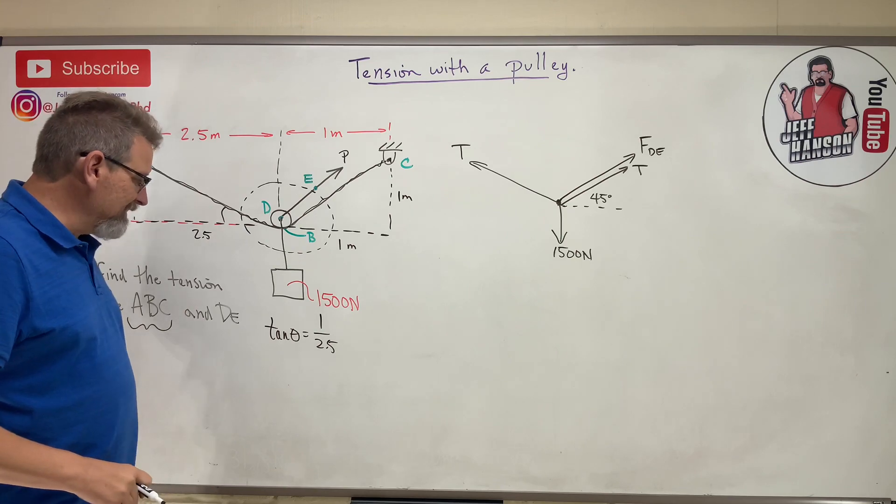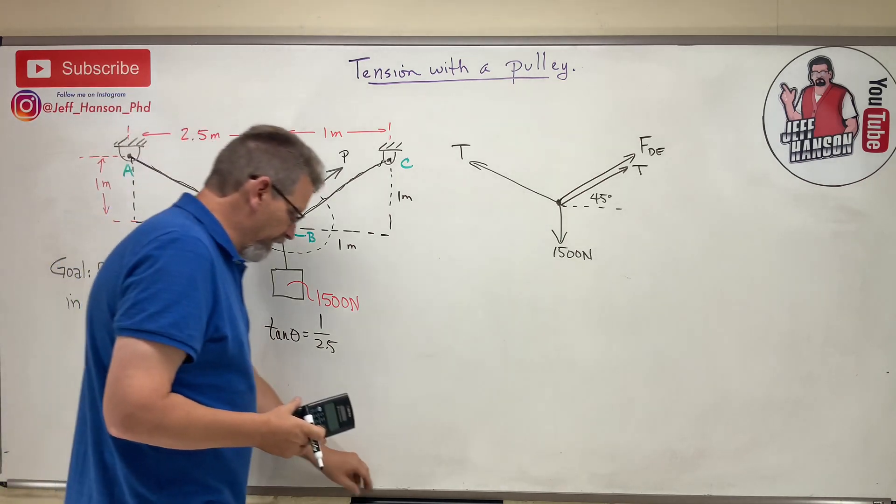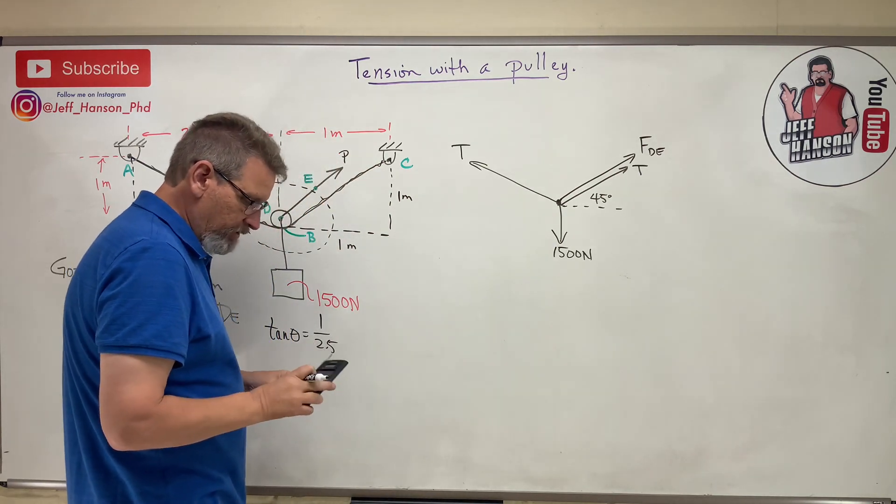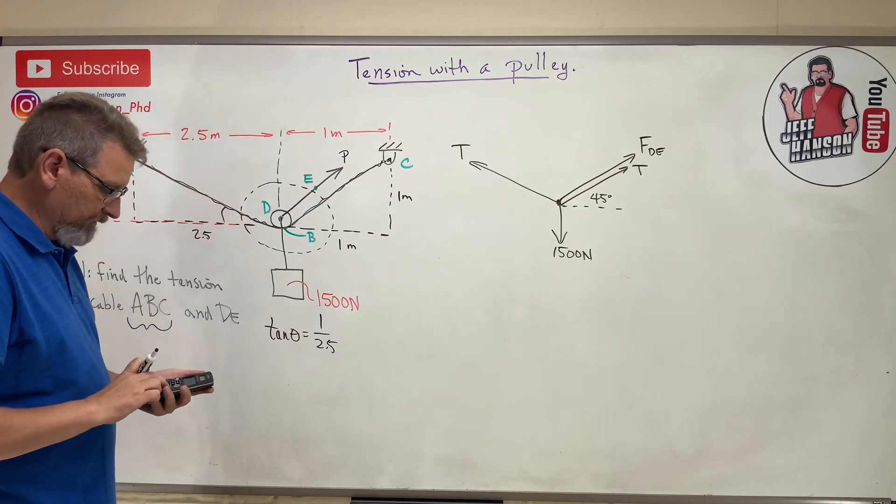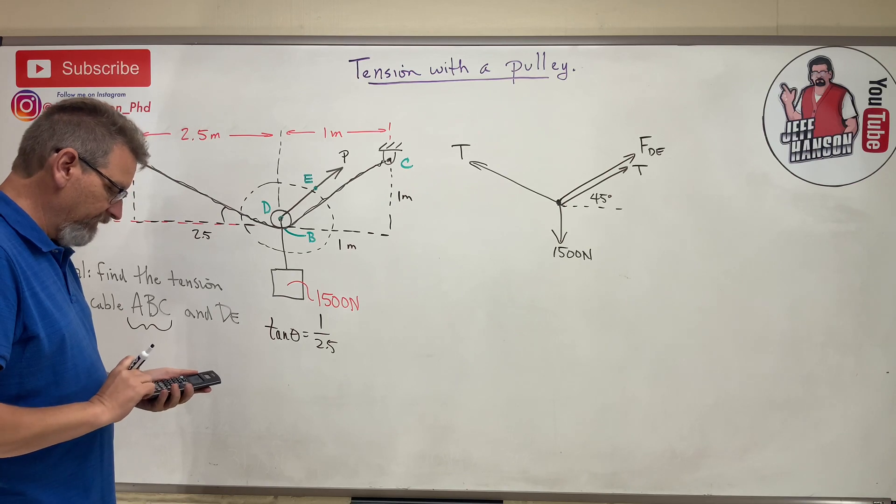I've got to use my handy dandy calculator. Oh, my handy dandy calculator is no bueno - every time I turn it on I have to push the memory clear button for some weird reason. Okay, so 1 divided by 2.5 equals 0.4, and then the inverse tan of that is 21.8 degrees.